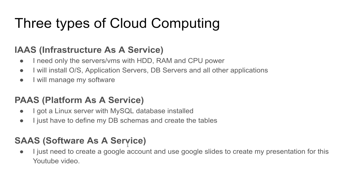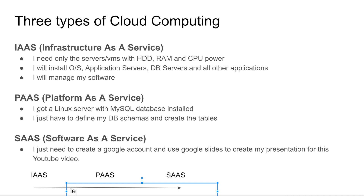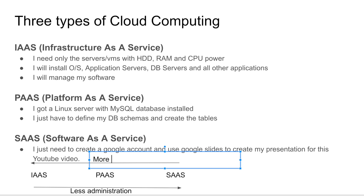Those are the three types of cloud computing. If you compare IaaS, PaaS, and SaaS: from Infrastructure as a Service to SaaS, there will be less administration. On the other hand, from SaaS to IaaS, there will be more control. It's a choice depending upon your situation — you can choose IaaS, PaaS, or SaaS.